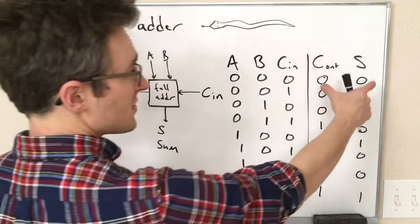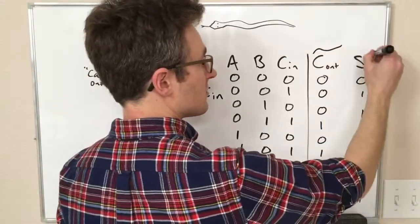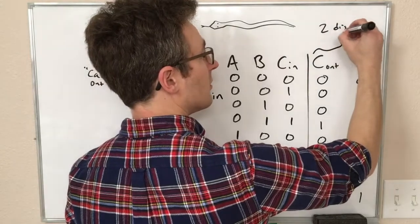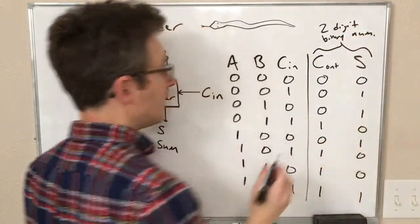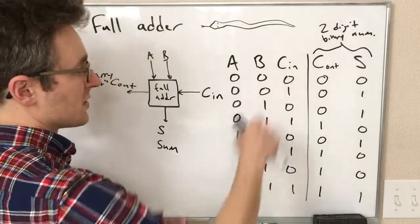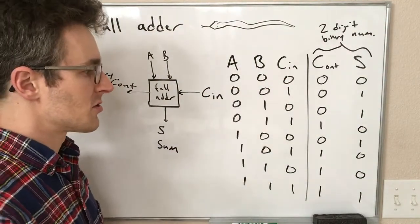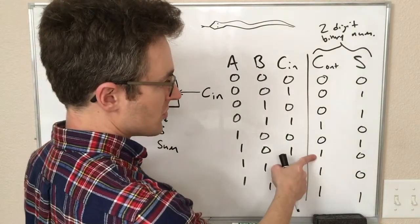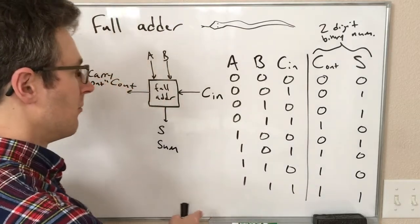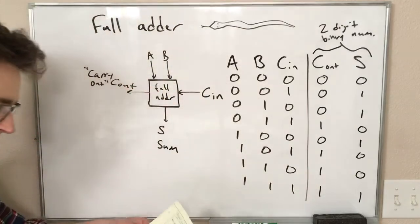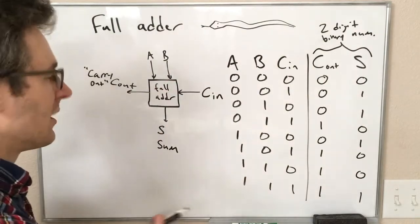So notice, this number here, these two digits, are literally a 2-digit binary number that is a plus b plus c, like the sum of these three digits. So 1, 0 is 2, so this is 2, this is 2, this is 2. 1, 1 is 3. Anyway, so that's kind of fun.